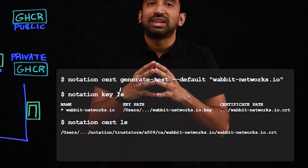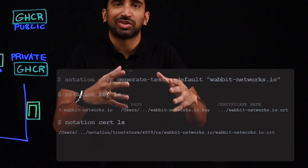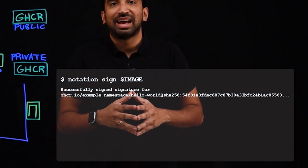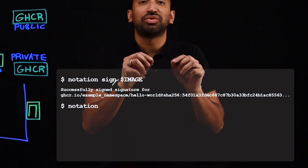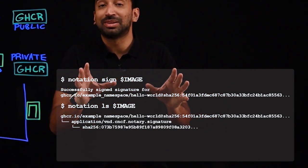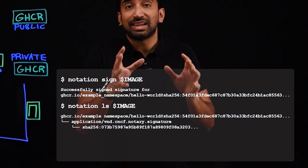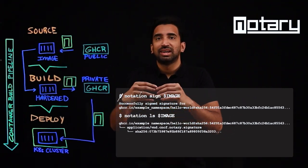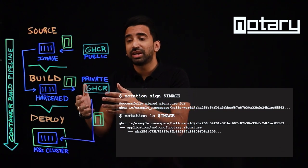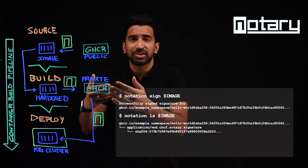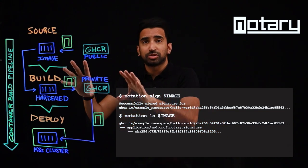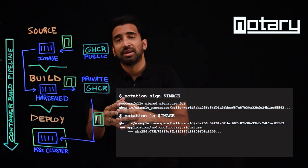Next, we'll need to actually sign the image. We'll use notation sign to sign that container image, and then we'll run the following check just to make sure that the signature has been attached to the image. The team has now signed the image, and it'll then be pushed into an OCI compliant registry — in this case, GitHub Container Registry — along with its signature. This will be living as a private image now.